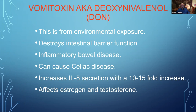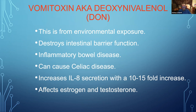Vomitoxin, also known as deoxynivalenol, is often cited as coming from crops — corn, wheat, soy. However, when exposure is environmental — where you live or work — this toxin also destroys the intestinal barrier function causing leaky gut, inflammatory bowel disease, and can even lead to celiac disease. It also increases interleukin secretion and affects estrogen and testosterone.